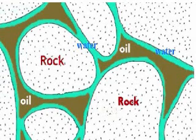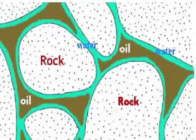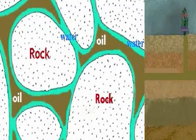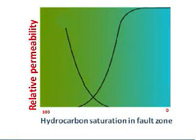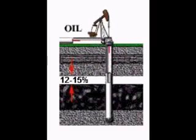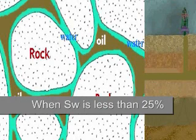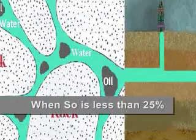Now, if we have the reverse — that is to say the fluid in the reservoir is mostly oil — then the oil phase is said to be continuous and it will flow, bypassing the water. The small amounts of water are bound to the sand grains by capillary forces and are said to be immovable. Thus, this reservoir would produce 100% oil. A general rule for many reservoirs is: when SW is less than 25%, only oil will flow; and when SO is less than 25%, only water will flow.